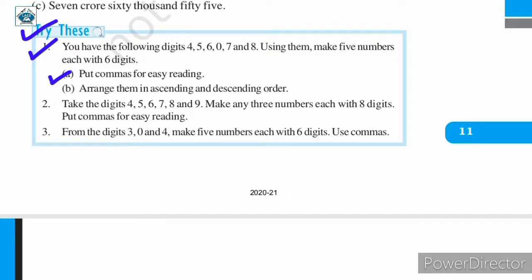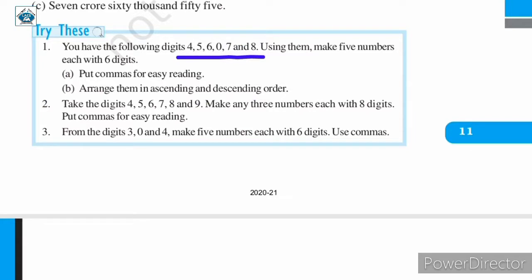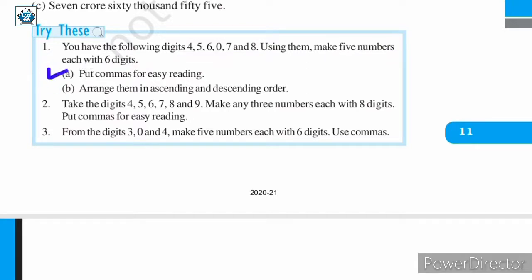Part A: put commas for easy reading. Part B: arrange them in ascending and descending order. So in this question we are given six digits — four, five, six, zero, seven, and eight — and we need to make five six-digit numbers. Then we put commas for easy reading, and arrange them in ascending and descending order.